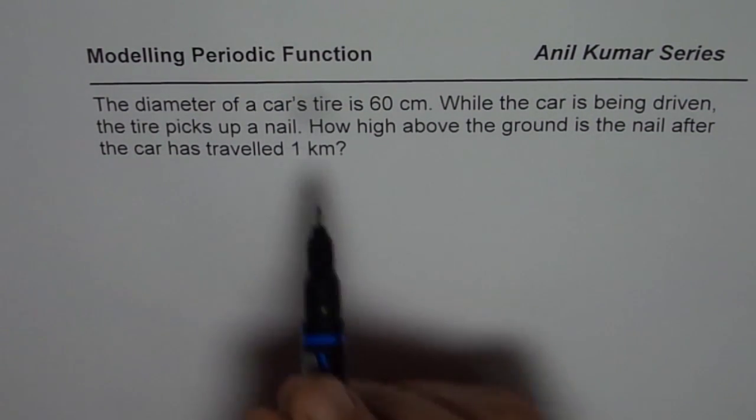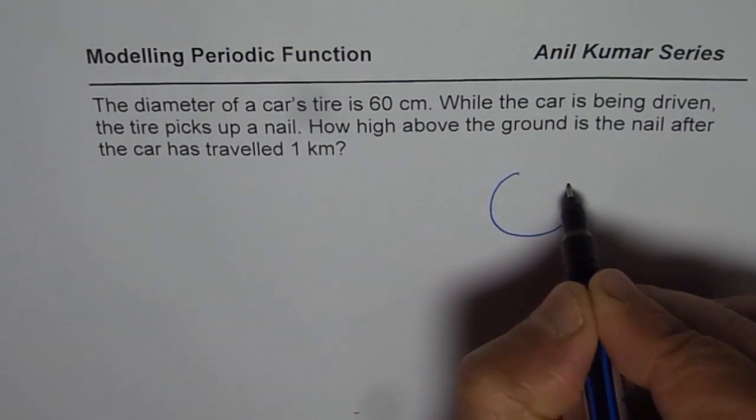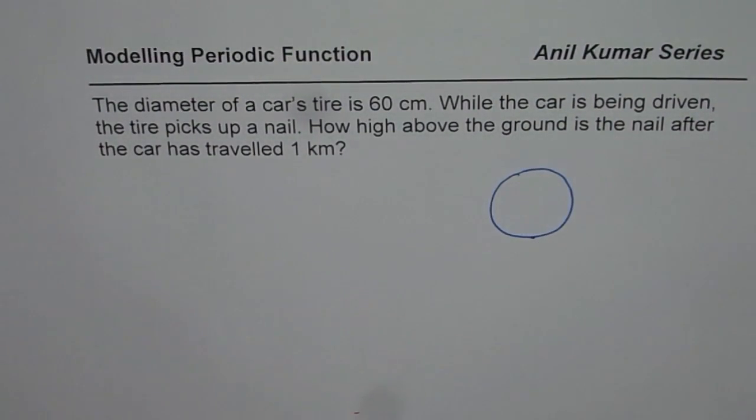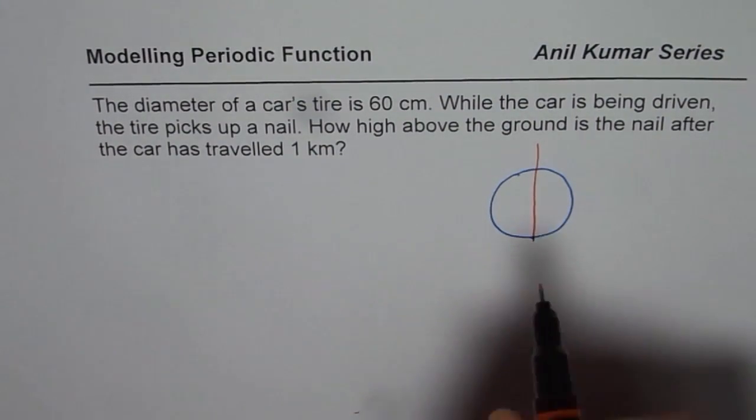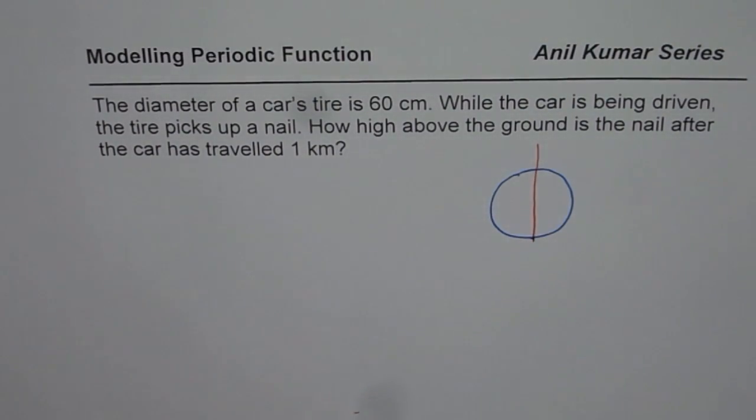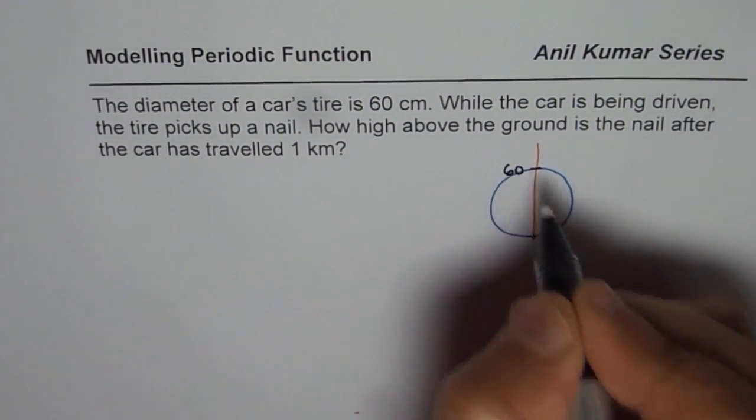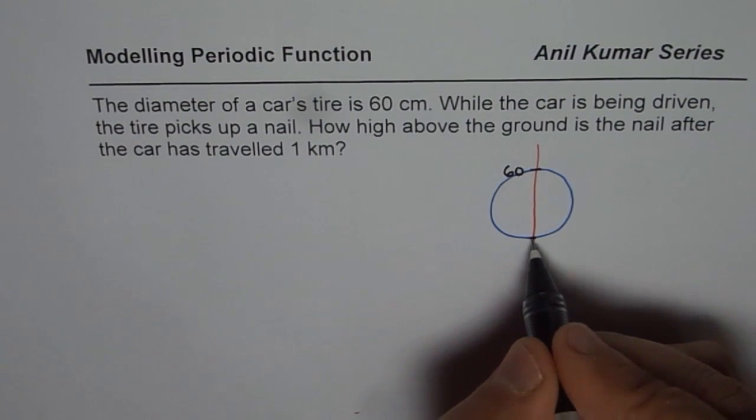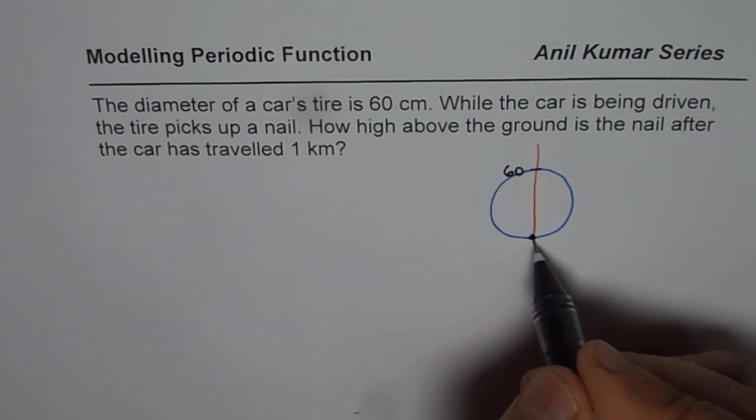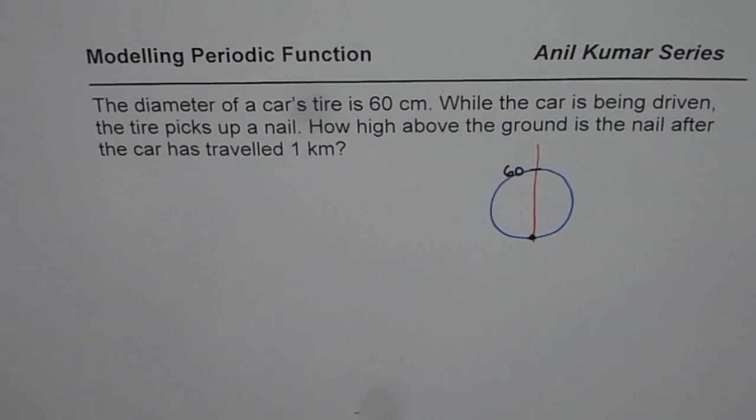Basically, in this particular question, there is a car which picks up the nail. The car wheel picks up a nail. Let's say this is the wheel and diameter of the wheel is given to us. Diameter is 60. That means from here to the maximum, the height is 60 for the wheel. At any instance of time, the nail which is picked up is going to be between 0 to 60. That is the range for the height of the nail.